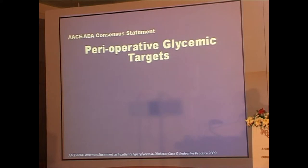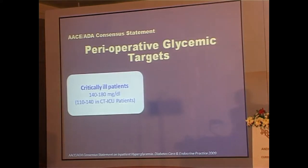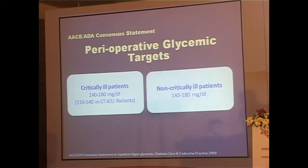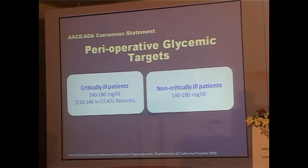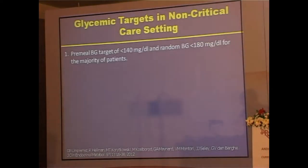There is clear consensus: in critically ill patients in hospital, keep glucose between 140 and 180, very carefully monitored. Glucose of 110–140 may be desired but is debatable. In non-critically ill patients, again keep glucose between 140 and 180. The key take-home message: keep your glucose between 140 and 180 in a hospitalized setting.